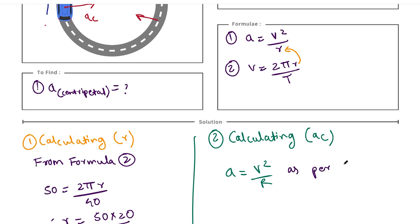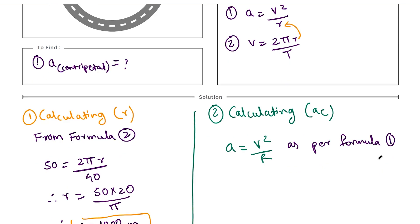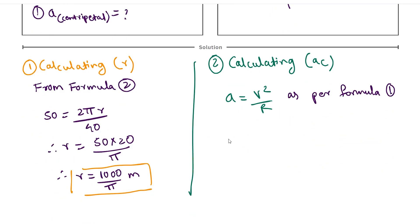We'll quickly substitute all the values. So a = 50² / (1000/π). Since π is in the denominator of the denominator, it will go into the numerator, so we'll have (2500 × π) / 1000.